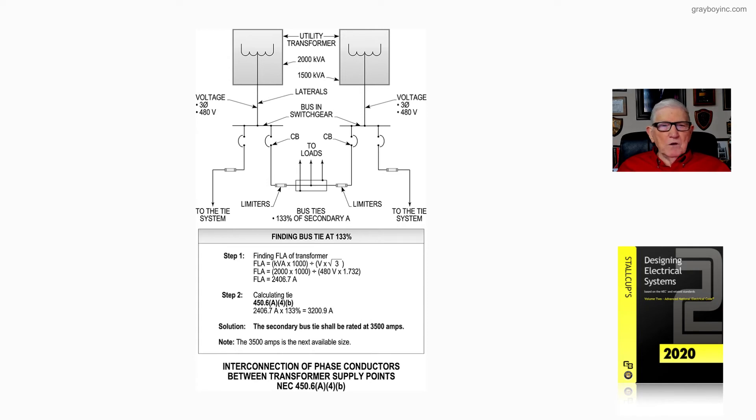We find the full load amps of the transformer. KVA times 1,000 divided by the voltage times the square root of 3. So we have 2,000 times 1,000 divided by 480 times the square root of 3, 1.732. When we do the math, we come up with 2,406.7 amps.